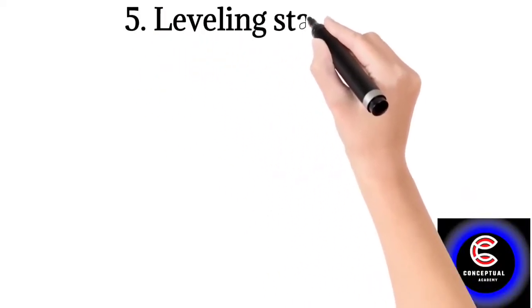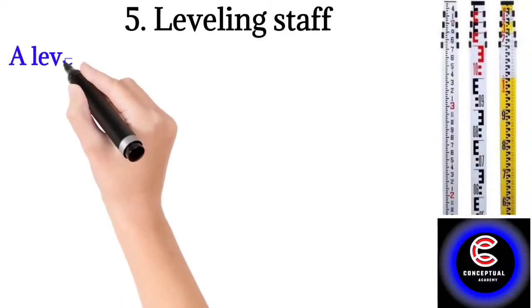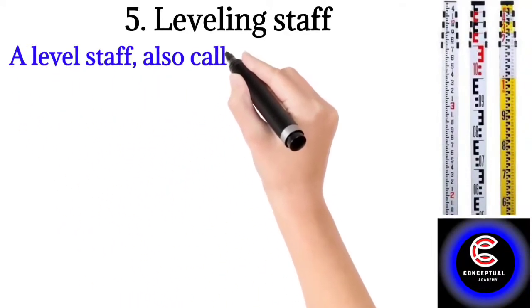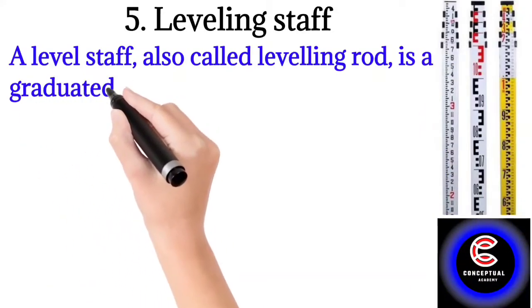Instrument number five: Leveling staff. As you can also see in the picture, a leveling staff, also called leveling rod, is a graduated wooden or aluminum rod.